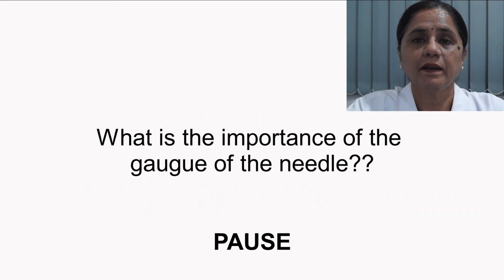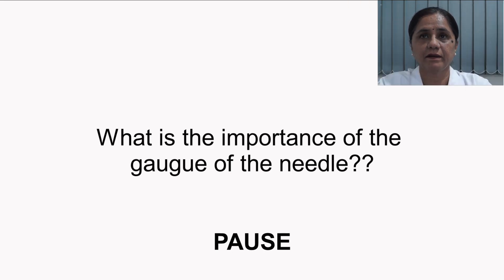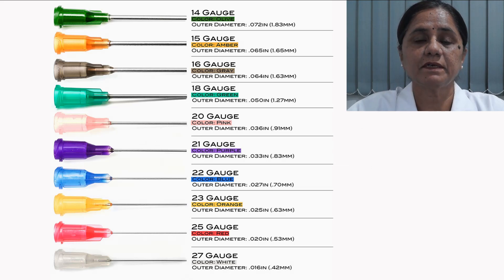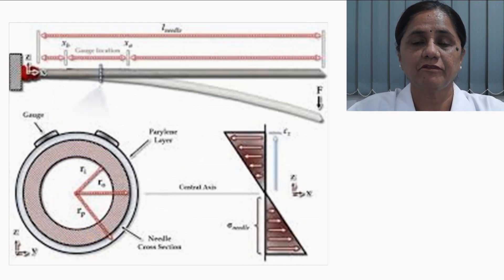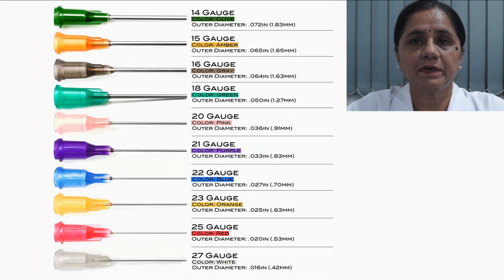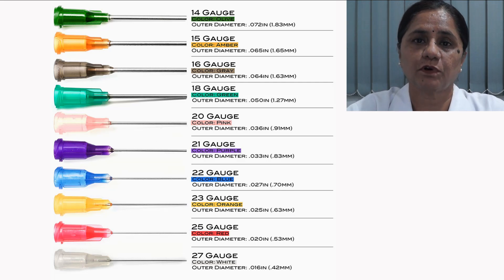At this point, pause the video and answer: what is the importance of the gauge of the needle? Discuss with your peer. A smaller internal diameter, denoted by a larger gauge number, has been shown to cause significantly higher deflection of the needle path and can result in missing the target area. Conversely, a larger internal diameter has been reported to be more traumatic and painful. Therefore, a 27 gauge needle is considered to be the good choice for the inferior alveolar nerve block technique.